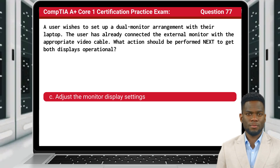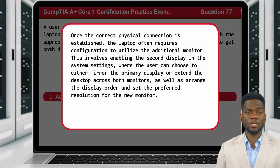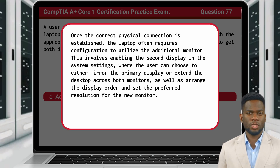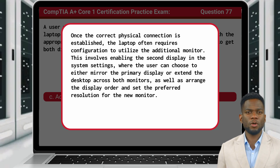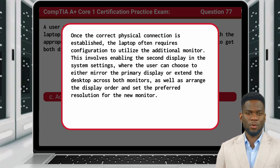The answer is C: Adjust the monitor display settings. Once the correct physical connection is established, the laptop often requires configuration to utilize the additional monitor. This involves enabling the second display in the system settings, where the user can choose to either mirror the primary display or extend the desktop across both monitors, as well as arrange the display order and set the preferred resolution for the new monitor.